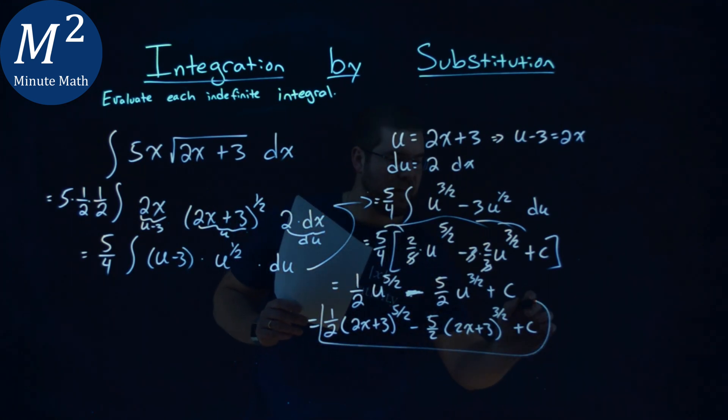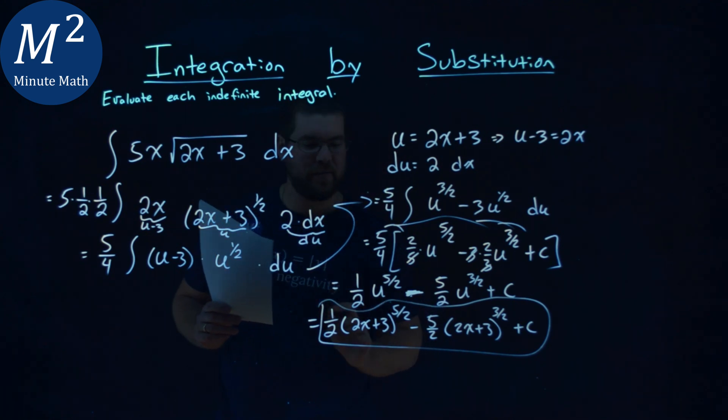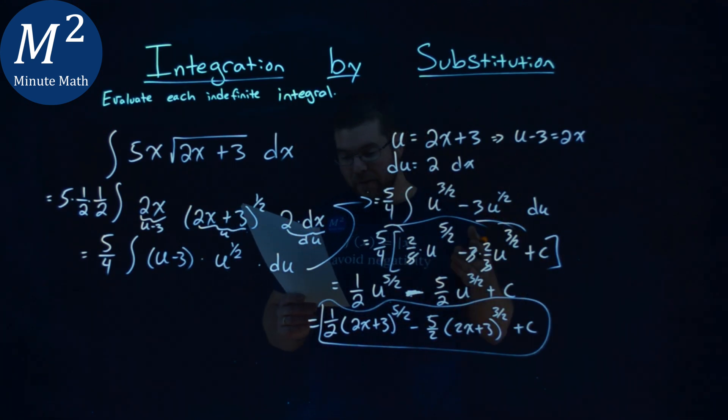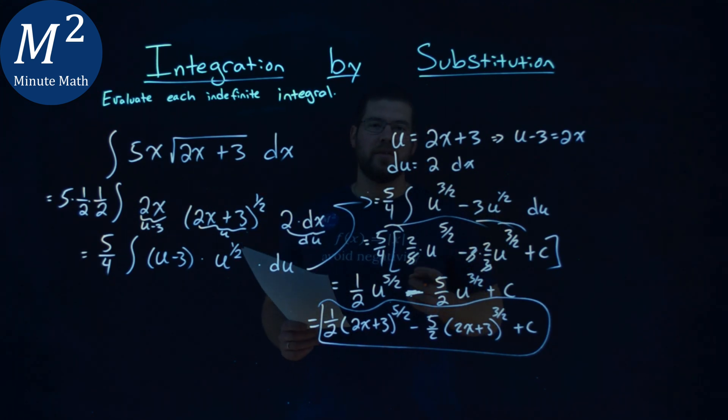And so my final answer here, if I can fit it all in, is a 1 half times 2x plus 3 to the 5 halves power, minus 5 halves times 2x plus 3 to the 3 halves power, plus c.